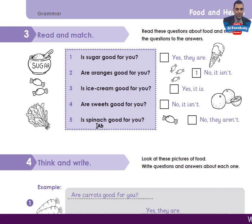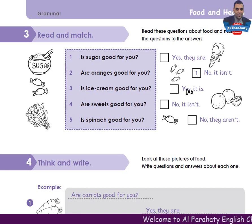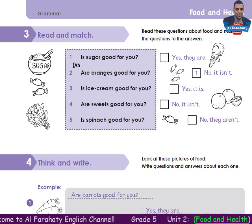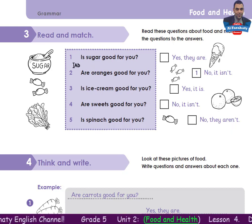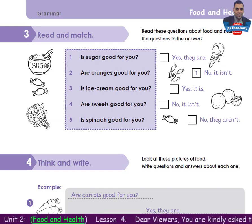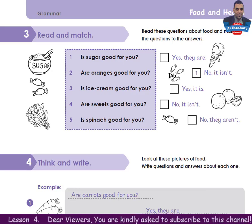Number 5: Is spinach good for you? You can pronounce it 'spinach' or 'spinach'. The answers are: Yes, they are. No, it isn't. Yes, it is. No, it isn't. No, they aren't. Number 1 is done for you. You are asked to match the questions to the answers. Take your time to do the activity, then come back to check your answers.